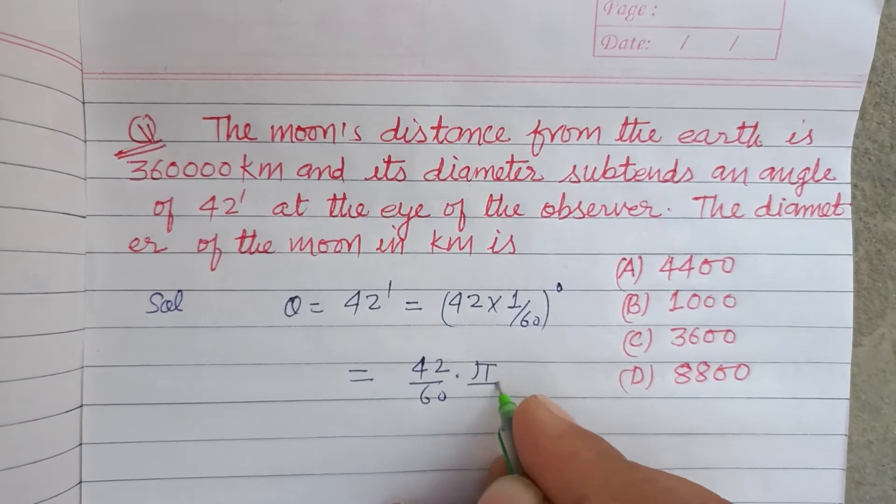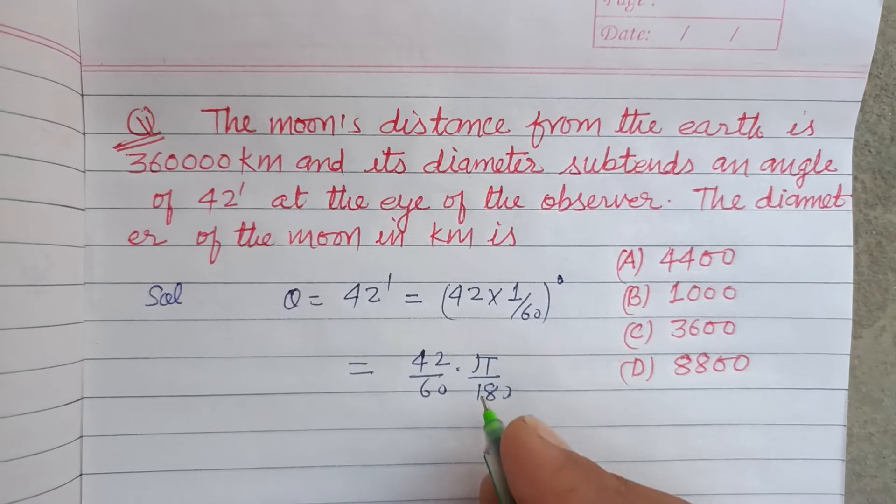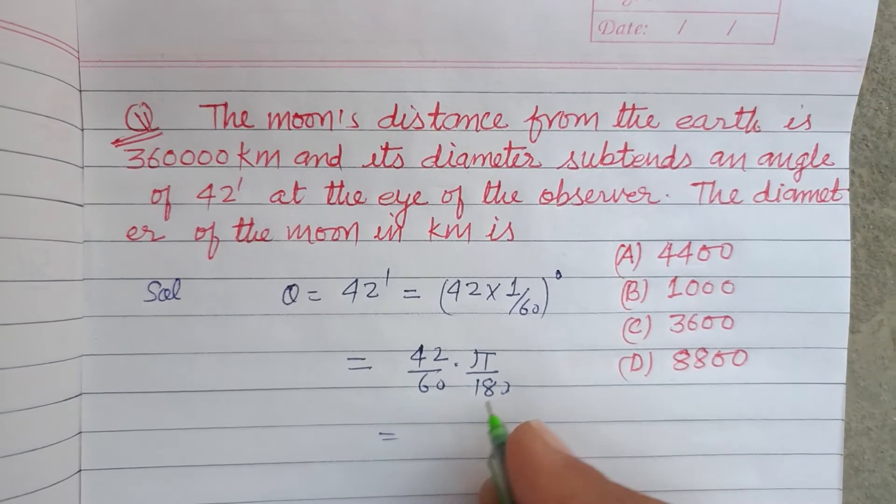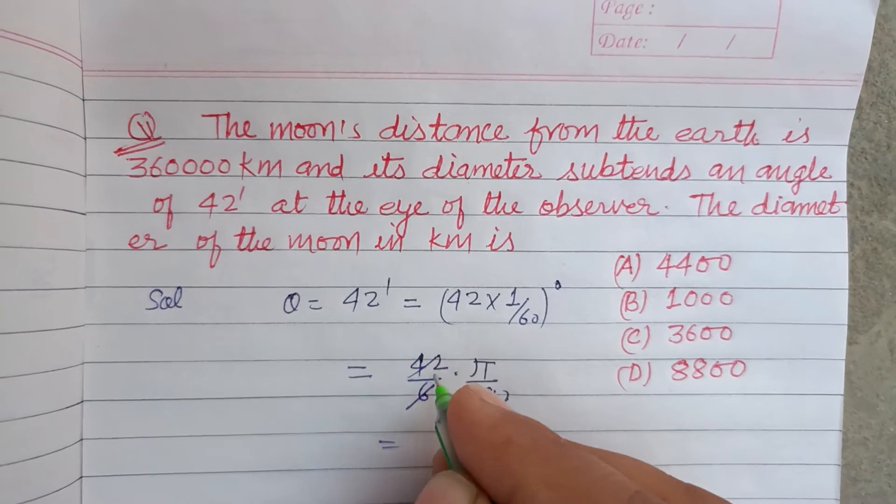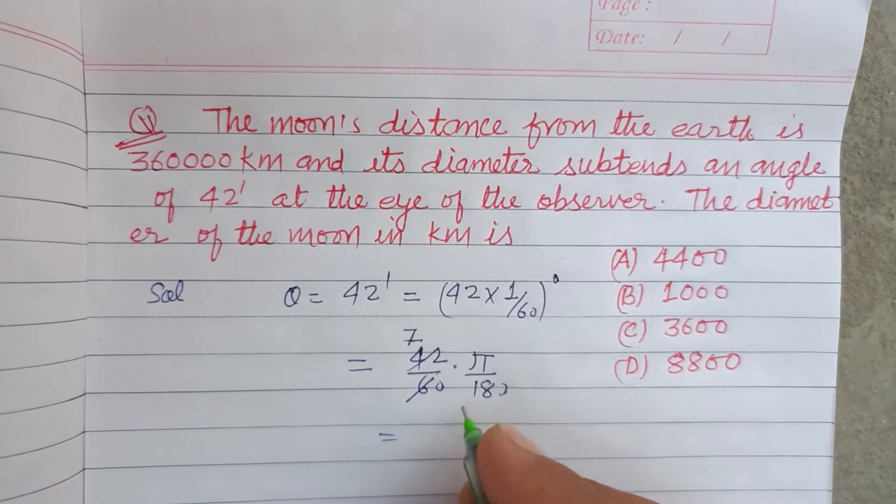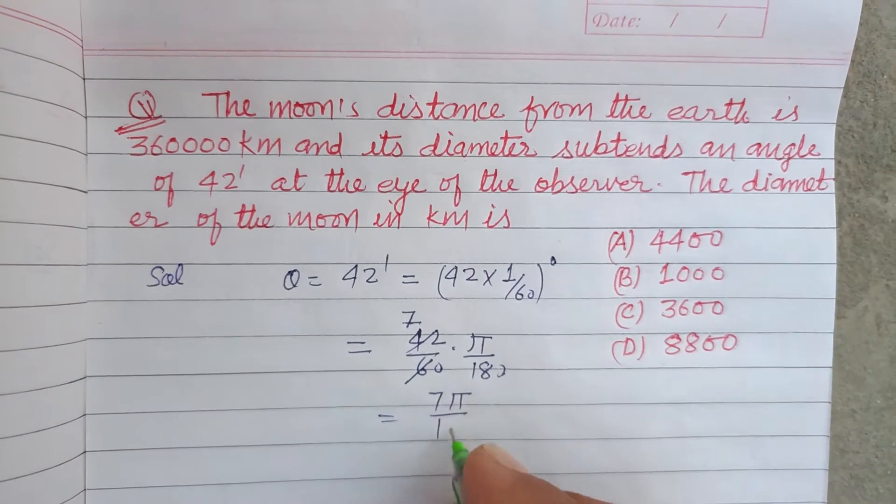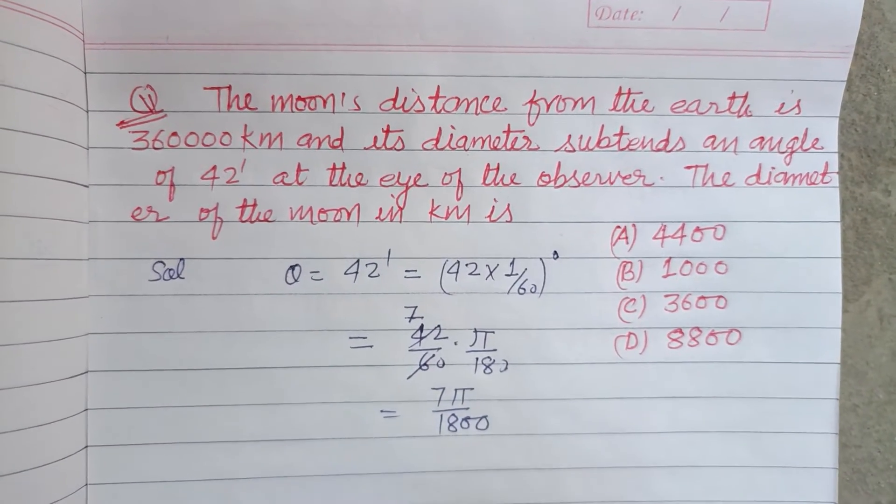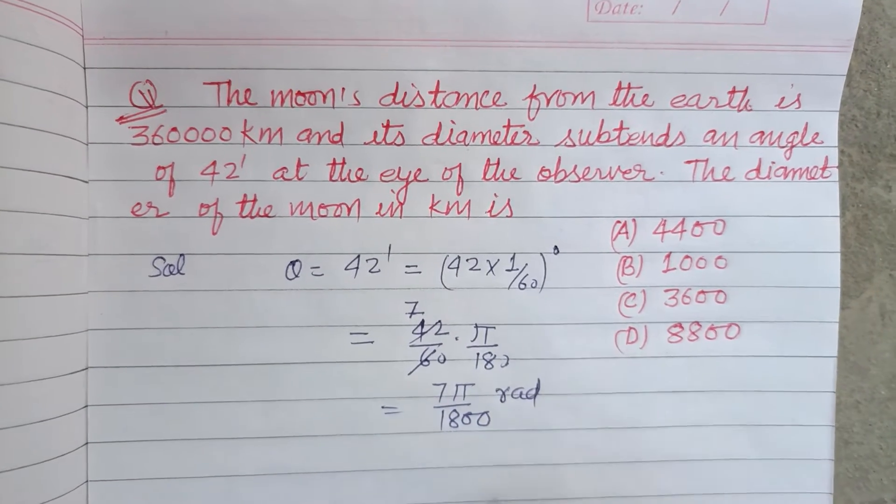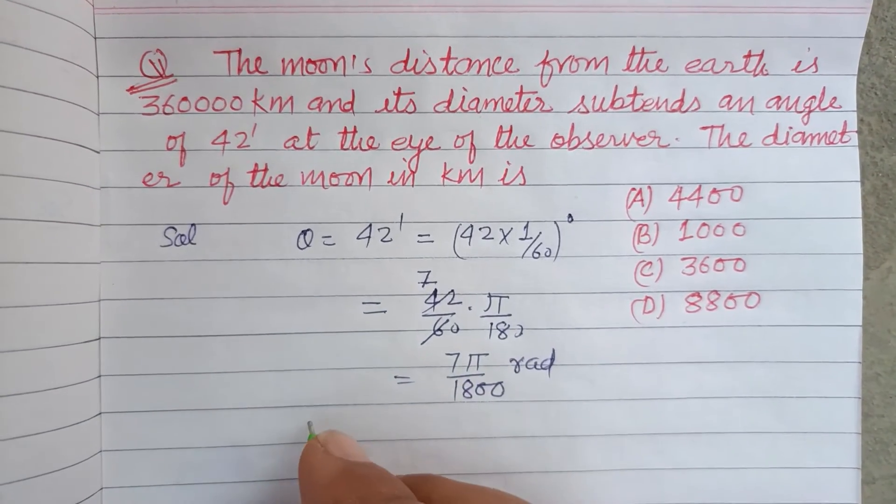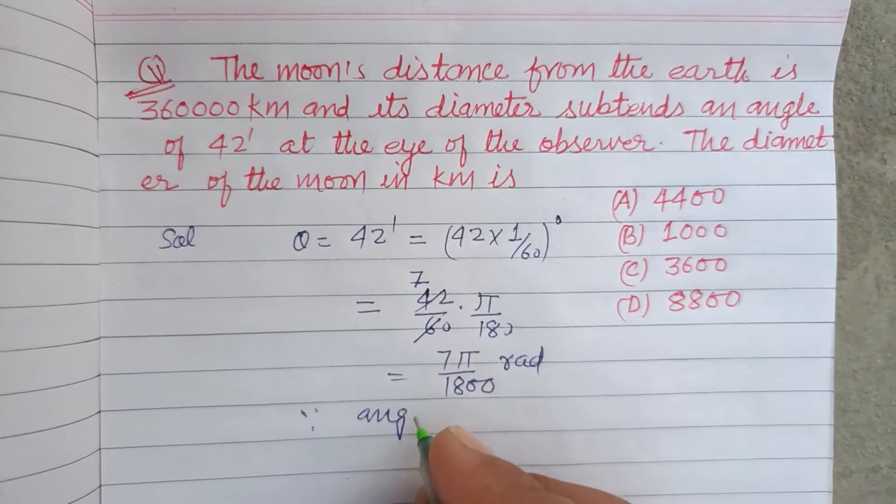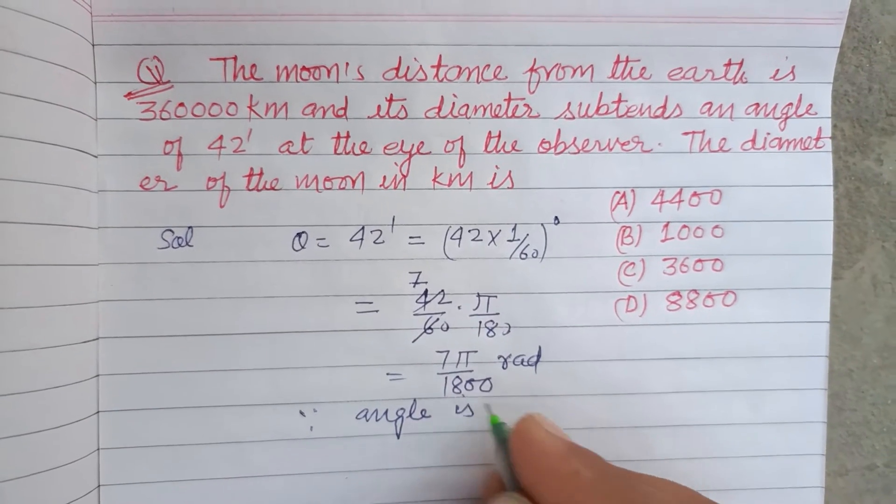Seven divides 42, so this becomes 7π upon 1800 radians.